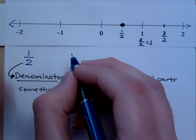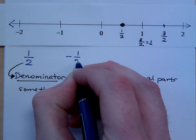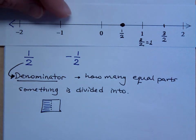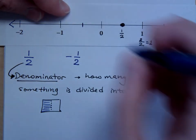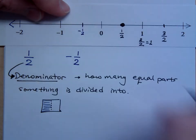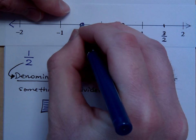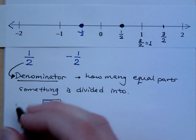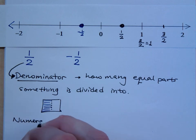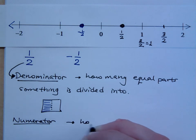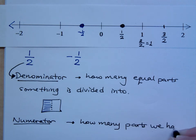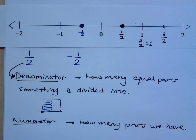What if I were to say negative one-half? Where do you think negative one-half would be? It should be between zero and negative one. So here we are cutting that in the middle, so this is cutting into half — there's negative one-half, and that's where that point would fall. The denominator is how many equal parts something is divided into, and the numerator is how many parts we have — how many parts that we're looking at, how many parts that we're taking.